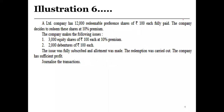Let's move to Problem 6. A Limited has 12,000 redeemable preference shares of Rs. 100 each, fully paid. The company decided to redeem these shares at 10% premium. The company makes the following issues: 3,000 equity shares of Rs. 100 each at 10% premium — so 3 lakh rupees — and 2 lakh rupees from debentures. However, any amount raised through issue of debentures cannot be utilized for the purpose of redemption of preference shares; only fresh issue of equity capital can be used. The company has sufficient profit.